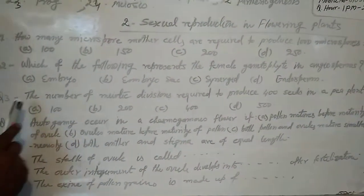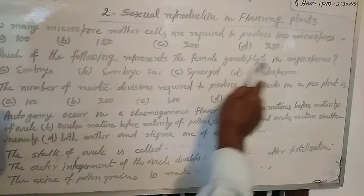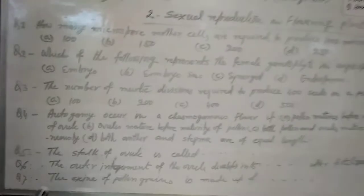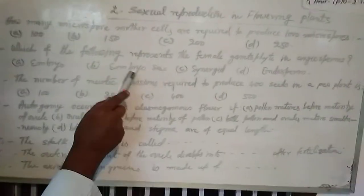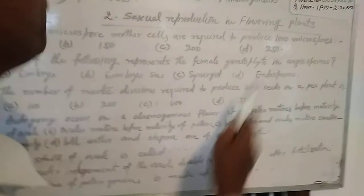Second, which of the following represents the female gametophyte in angiosperms? Question number 2. A: Embryo, B: Embryo sac, C: Synergid, D: Endosperm.